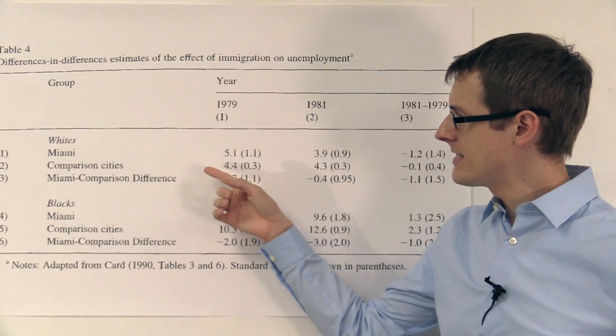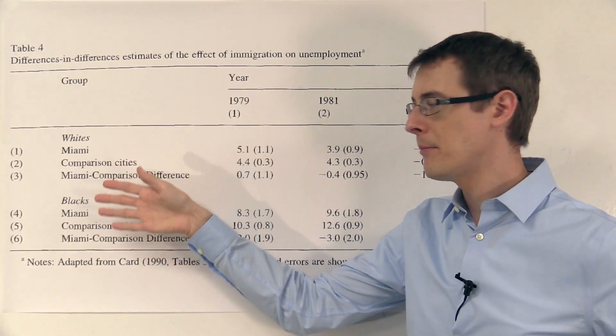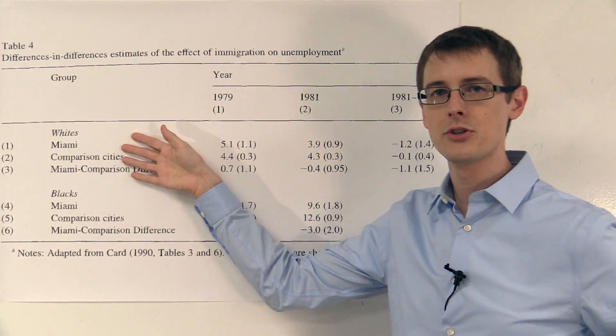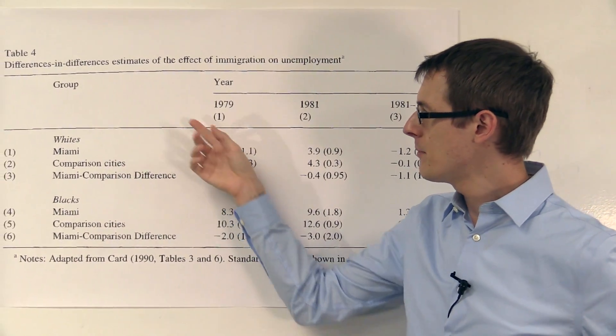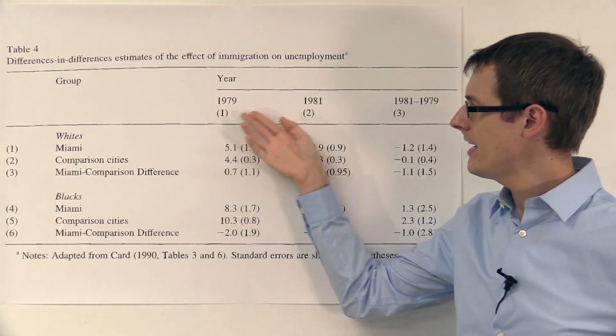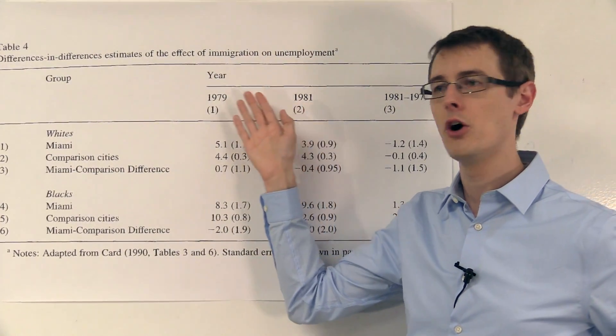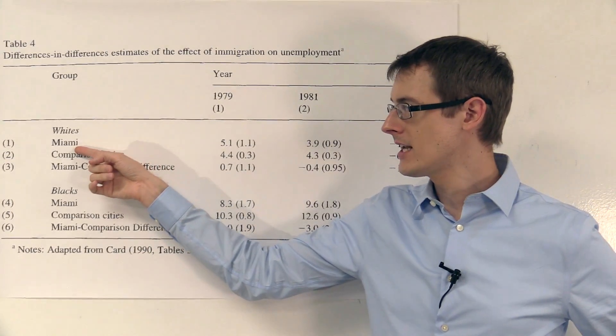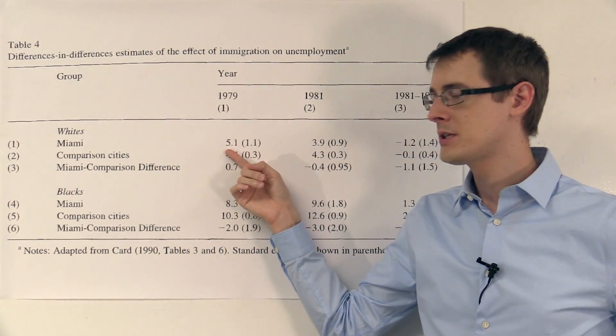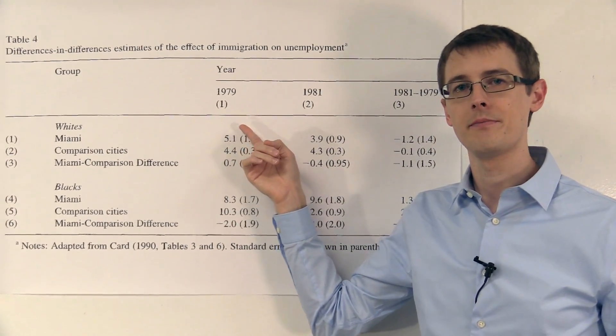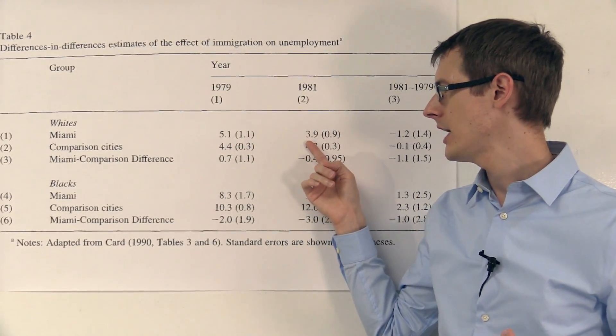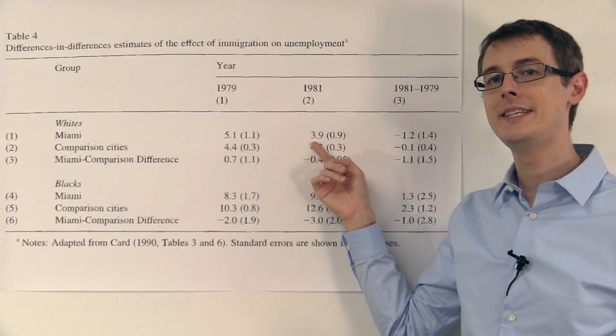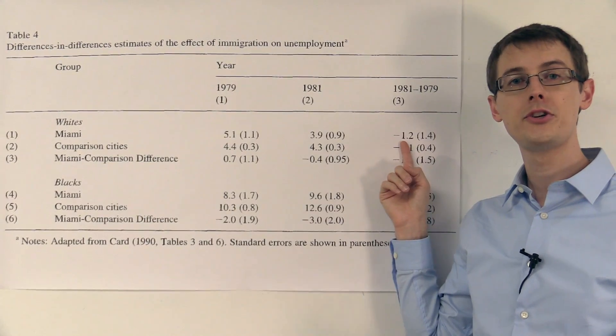So here, I've got data split by whites and by blacks. So let's start with just the whites. I've got the unemployment rate in 1979 and in 1981. So before the immigration and after immigration. So for whites living in Miami, the unemployment rate was 5.1% before the immigration. After immigration, it was 3.9%. So it decreased by 1.2%.